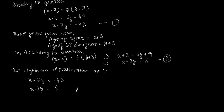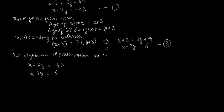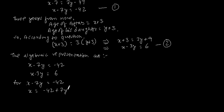For the graphical representation, we need to make a solution table for each algebraic representation. Let's start with the first expression: x minus 7y equals minus 42, which can be written as x equals minus 42 plus 7y.